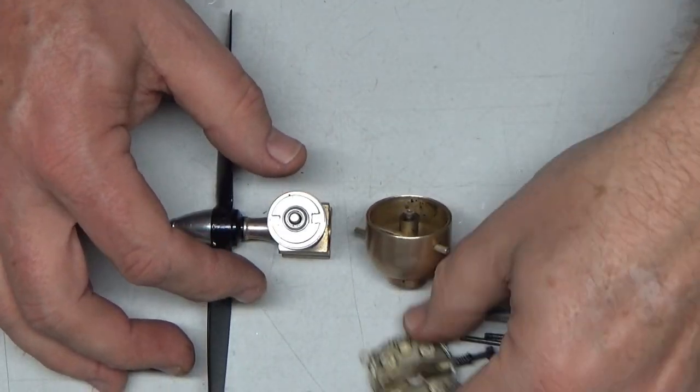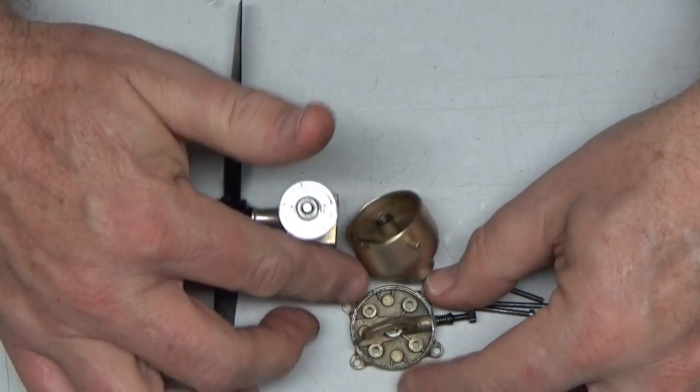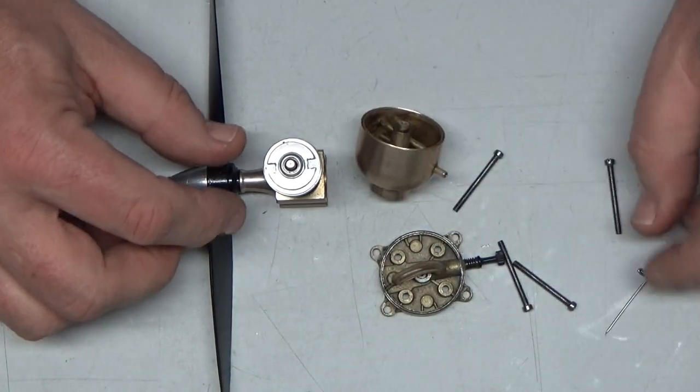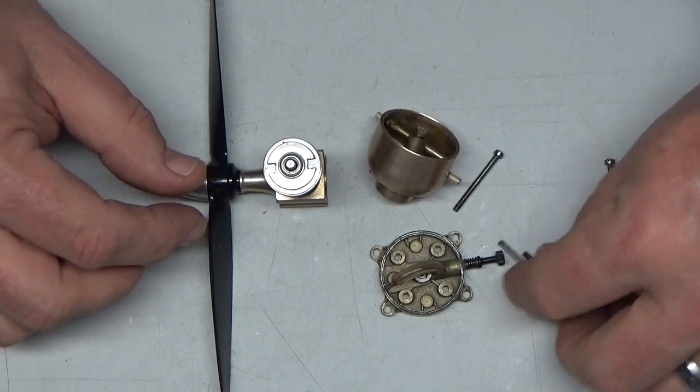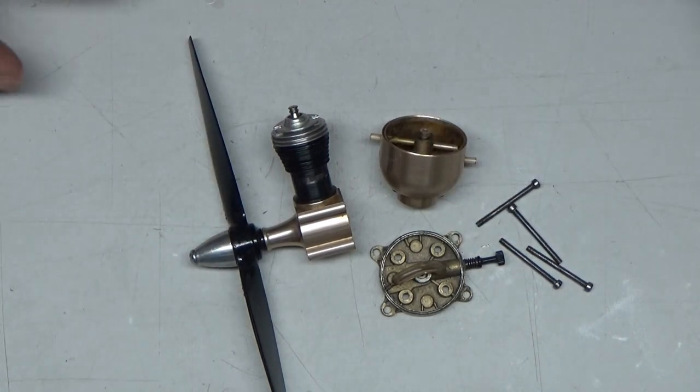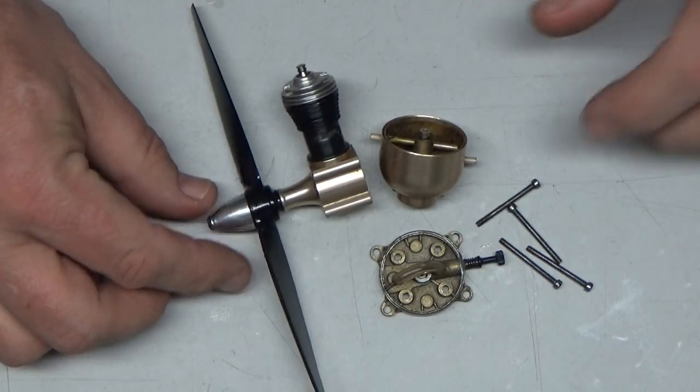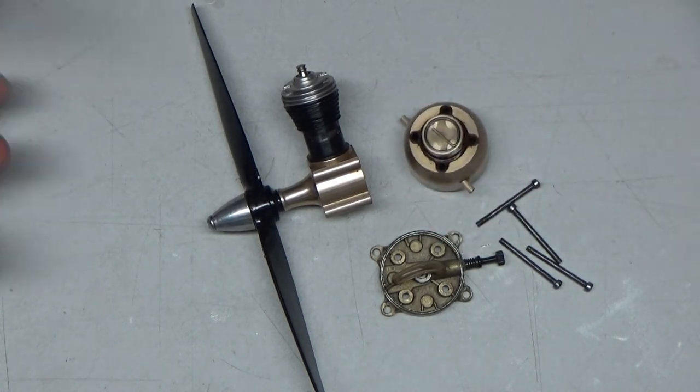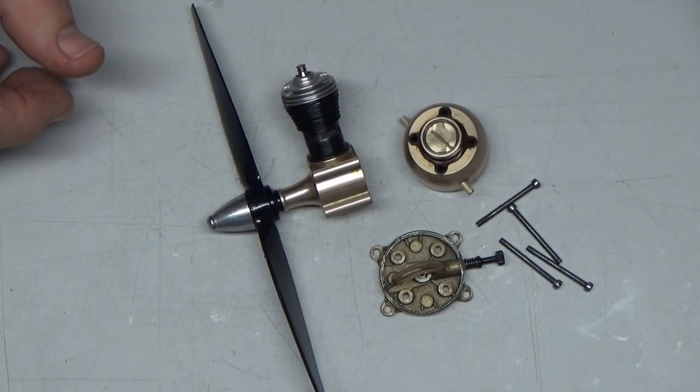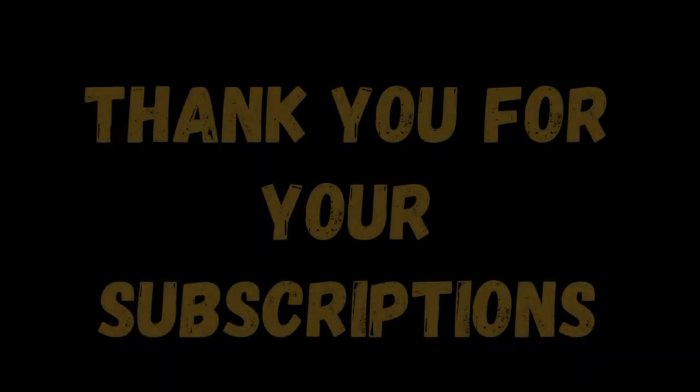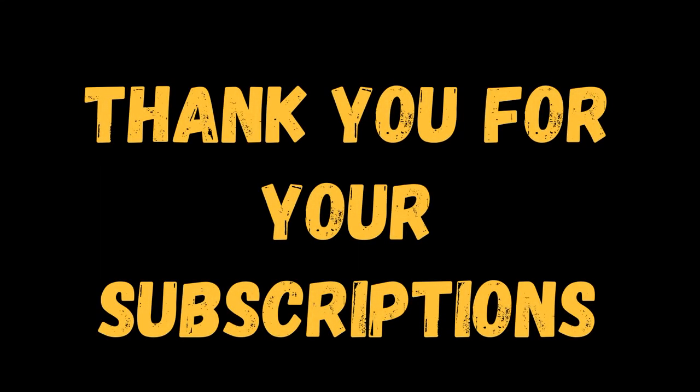So I'm going to think about, see if I've got some small tubing to replace this with before I put this thing back together. But anyway, that's a quick look at my newest edition, which is a Cox Golden Bee. So look for some run videos of this to be produced very shortly. And thank you for watching.